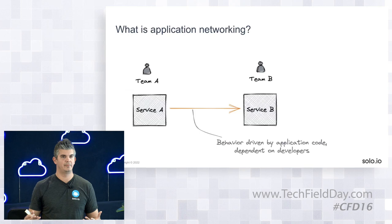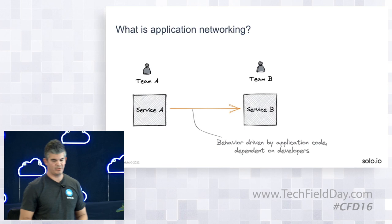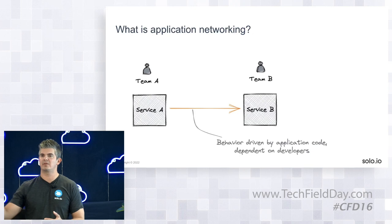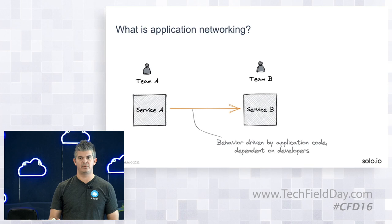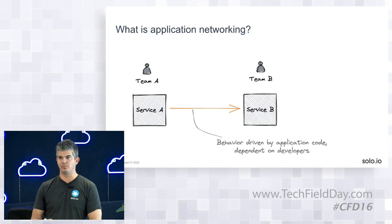When you deploy on a cloud platform like a container-based one like Kubernetes, first of all you have to find where is Service B — how does Service A know where to talk to Service B? Because of the dynamic nature, we have to be responsive to when Service B fails or gets moved to different availability zones or regions. We need to be able to discover that, so things like service discovery are extremely important.